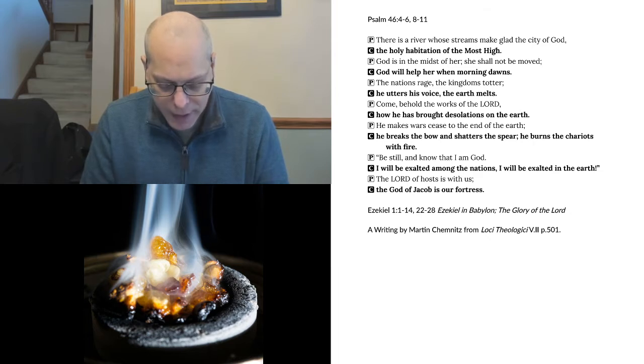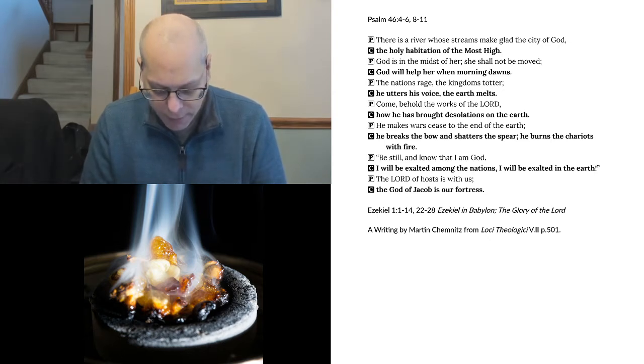Under their wings, on their four sides, they had human hands. And the four had their faces and their wings thus. Their wings touched one another. Each one of them went straight forward, without turning as they went. As for the likeness of their faces, each had a human face. The four had the face of a lion on the right side. The four had the face of an ox on the left side. And the four had the face of an eagle.